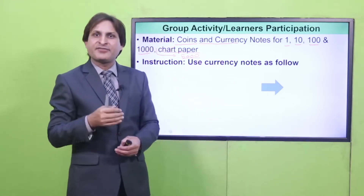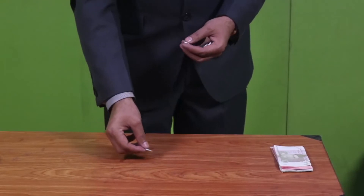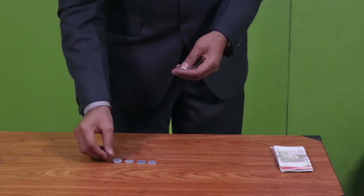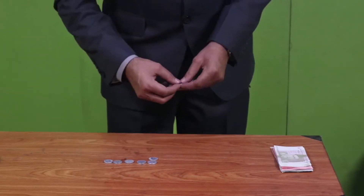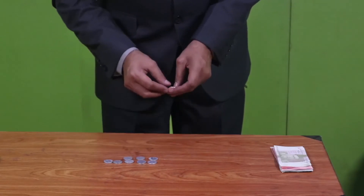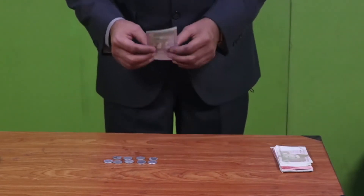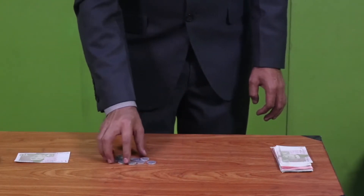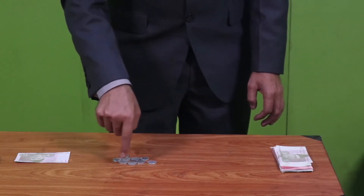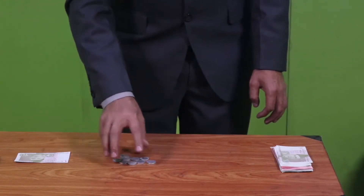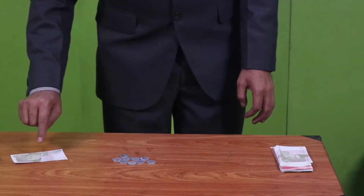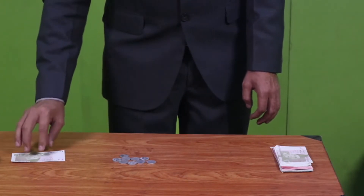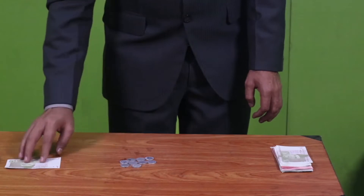Now we will go towards the activity. Students, I have 10 coins of one rupee. When I count them, these 10 coins together are equal to this currency note. Because if I put all these coins in my pocket it would look bulky — instead I can take one currency note. So this currency note shows 10 ones: the first two-digit number.